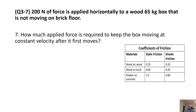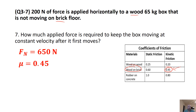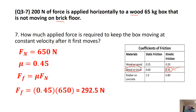How much applied force is required to keep the box moving at a constant velocity? We're still doing wood on brick, but we're keeping it moving at constant velocity, so we use the coefficient of kinetic friction. The box still has a weight of 650 newtons and normal force of 650 newtons. We use a coefficient of kinetic friction of 0.45 from the table, and when we solve for force of friction, we get 292.5 newtons.